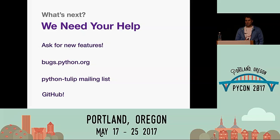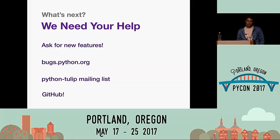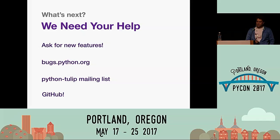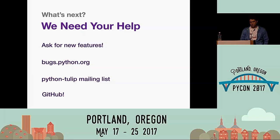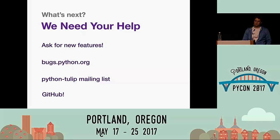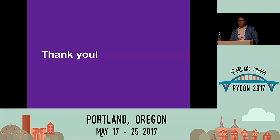Overall, we need your help. Ask for new features using bugs.python.org. We also have the Python-tulip mailing list — Guido reads it and helps a lot — and we're on GitHub. CPython moved to GitHub completely, so you can issue pull requests easily. The whole idea of this migration was to involve more people in CPython and asyncio development. I think asyncio has a very bright future, especially with things like Rust integration. That's it — if you have any questions, I'd be happy to address them.